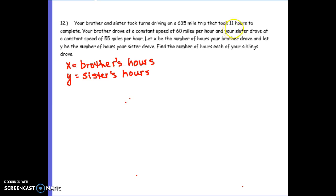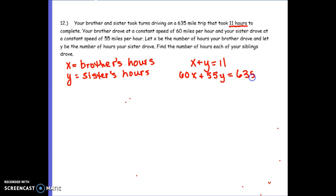There are two equations hidden in here. The easy equation: the trip took 11 hours, so if I take brother's hours and add sister's hours, that equals 11. For the second equation: your brother drives at 60 miles per hour, so 60 times X, plus your sister driving at 55 miles per hour, gives a total of 635 miles. Here are our two equations: two equations, two variables — we can solve it.